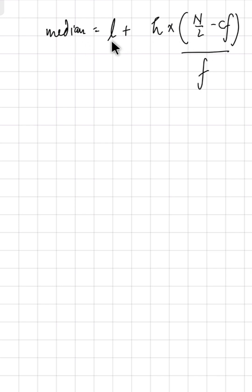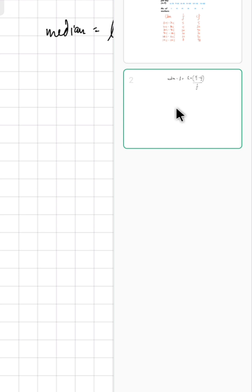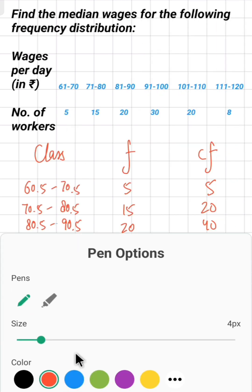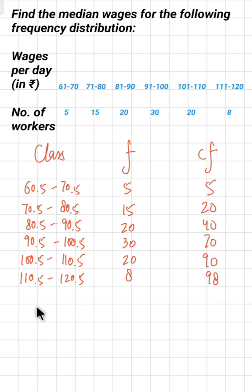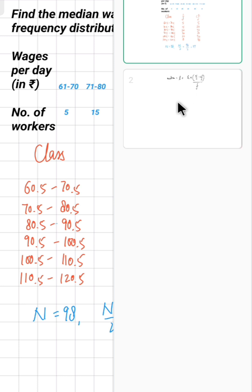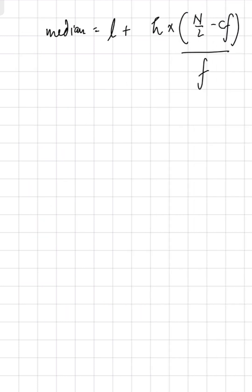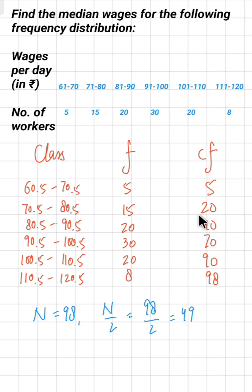The formula to find median is: Median = L + h × ((N/2 − CF) / f). Capital N is the sum of all frequencies, which is 98. So N/2 is 98 divided by 2, which equals 49.